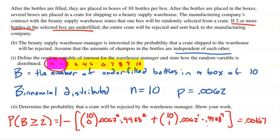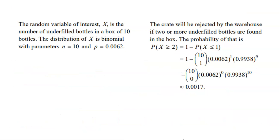This is the shortest way to show your work. The answer 0.00167 is the probability a crate gets rejected. We found P(B ≤ 1) — zero or one underfilled — and did one minus that result to get P(B ≥ 2), which is what we were looking for.